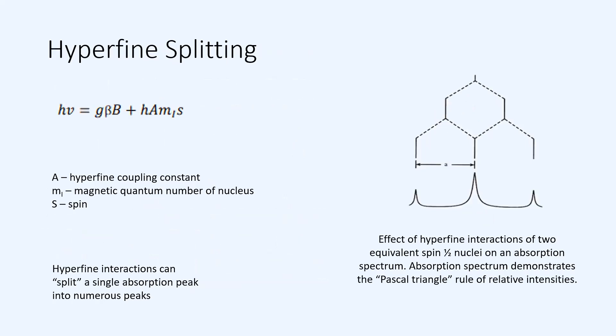I've included up to this point only considerations of an unpaired electron with external magnetic field. However, there are other interactions that are possible, such as the unpaired electron with nuclear spin. We can modify the equation we saw previously to include the hyperfine coupling constant, magnetic quantum number of the nucleus, and the spin, to account for hyperfine splitting.